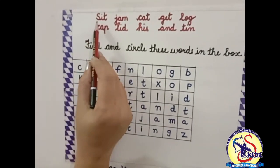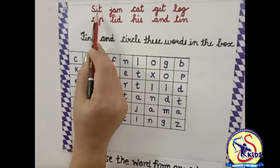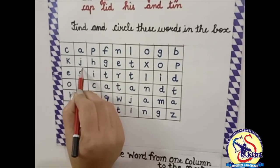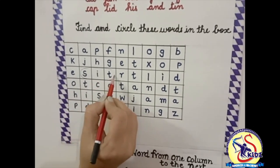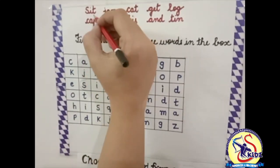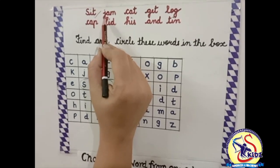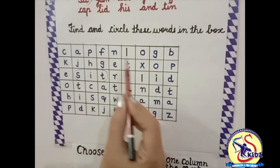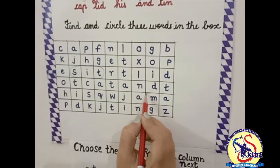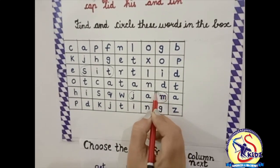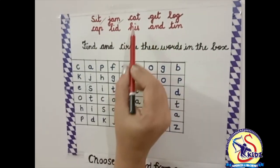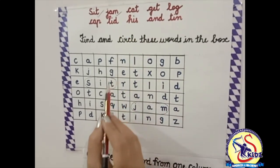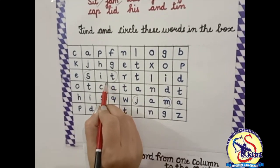Let's do it. Our first word is S-I-T, set. Let's see where the word set is — yes, S-I-T, set, so circle this word. Our next word is J-A-M, jam. Now let's find out the word jam. Yes, circle this word. Our next word is C-A-T, cat. Yes, here is the word cat — circle this word.